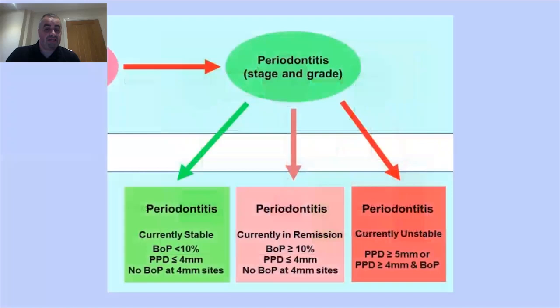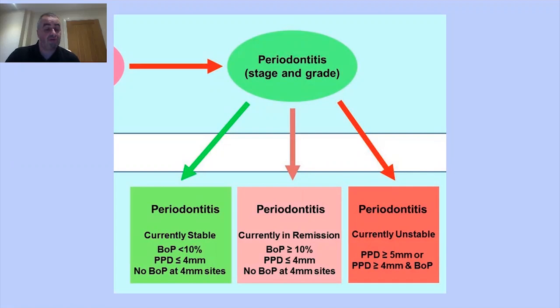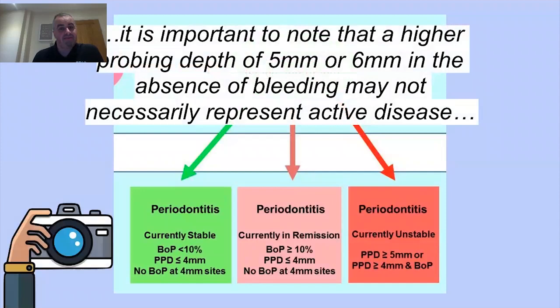There's now the concept of stable, in remission, or unstable. Stable means shallow pockets and a bleeding on probing score of less than 10% — we don't need zero BOP to move toward supportive care. In remission means higher bleeding scores but not necessarily deeper pockets. Unstable means deep pockets or significant bleeding. The BSP note that not every 5–6mm pocket that doesn't bleed is necessarily active disease, but on first presentation you'd want to try to reduce pocket depth.